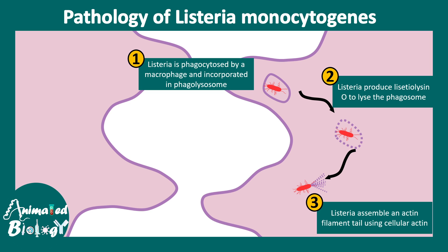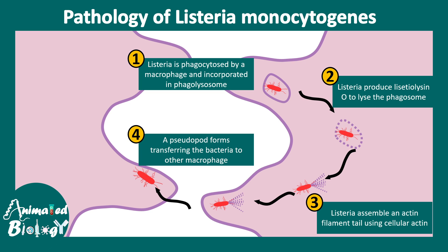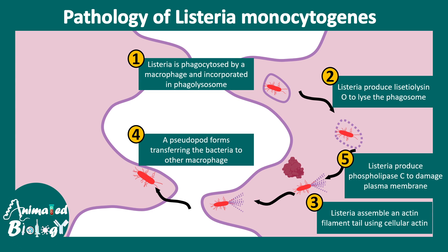Inside the monocyte or macrophage, Listeria assembles actin filaments to form an actin tail-like structure, which helps it propel inside and form a pseudopod-like structure. Eventually it moves from one cell to another. Listeria also produces phospholipase C enzyme, which can damage the plasma membrane of the phagosome as well as the plasma membrane of these cells, allowing it to damage and spread between cells.